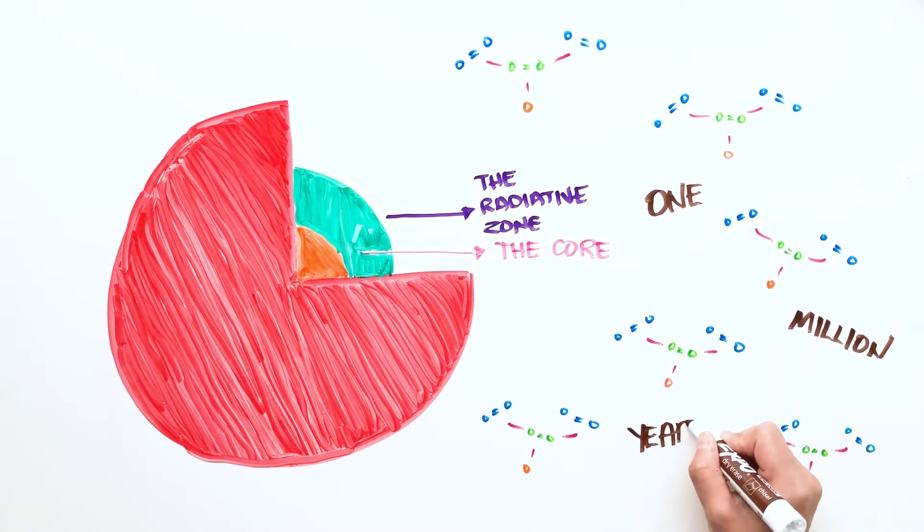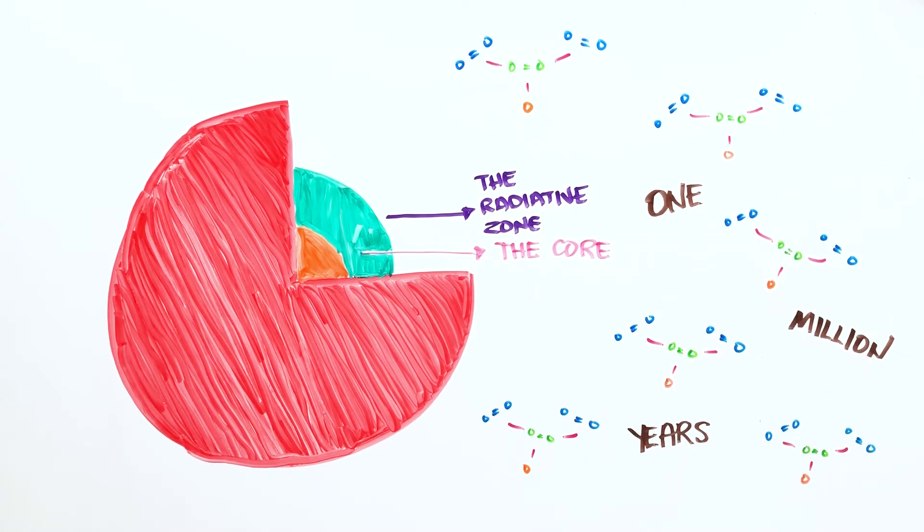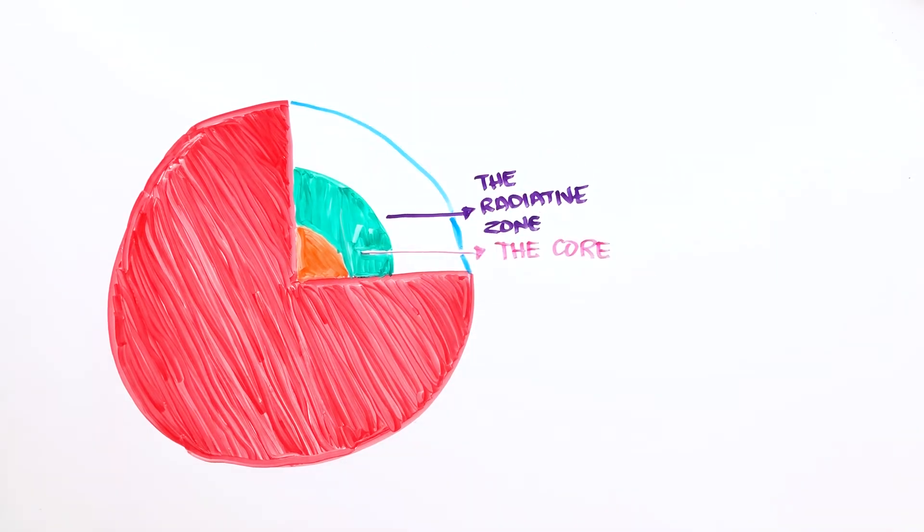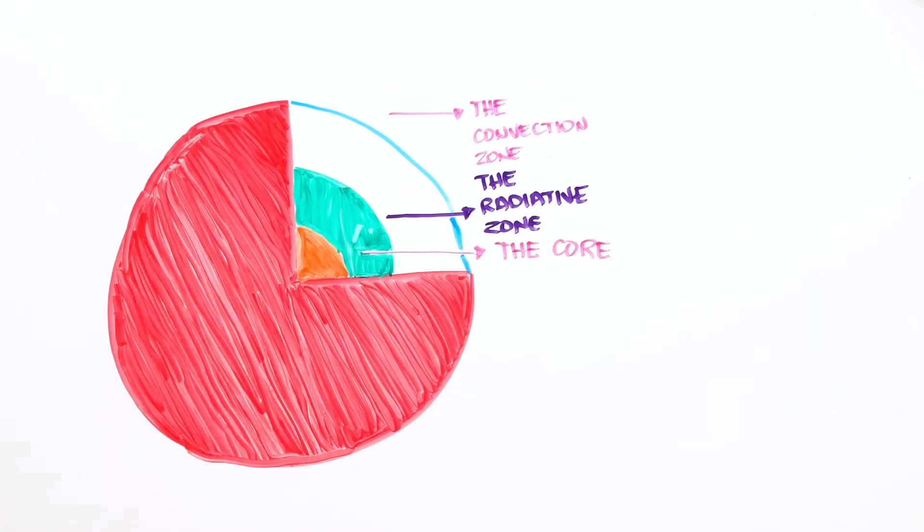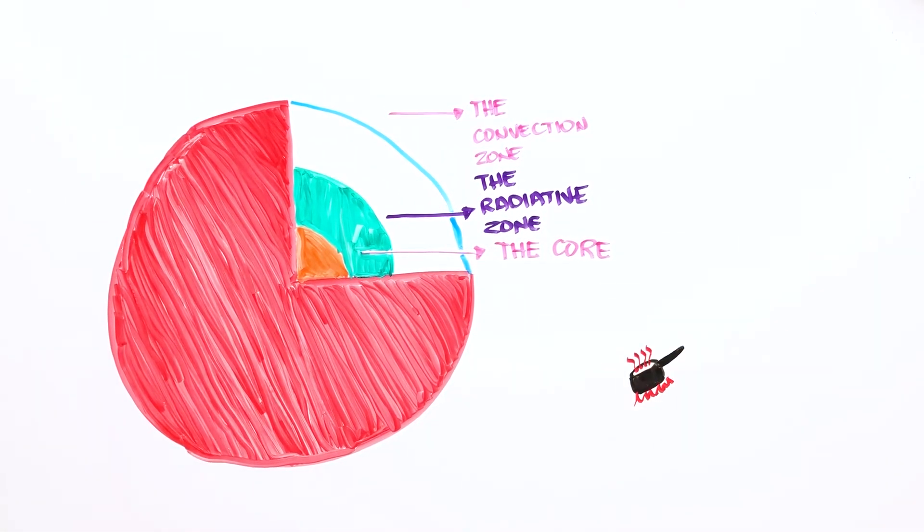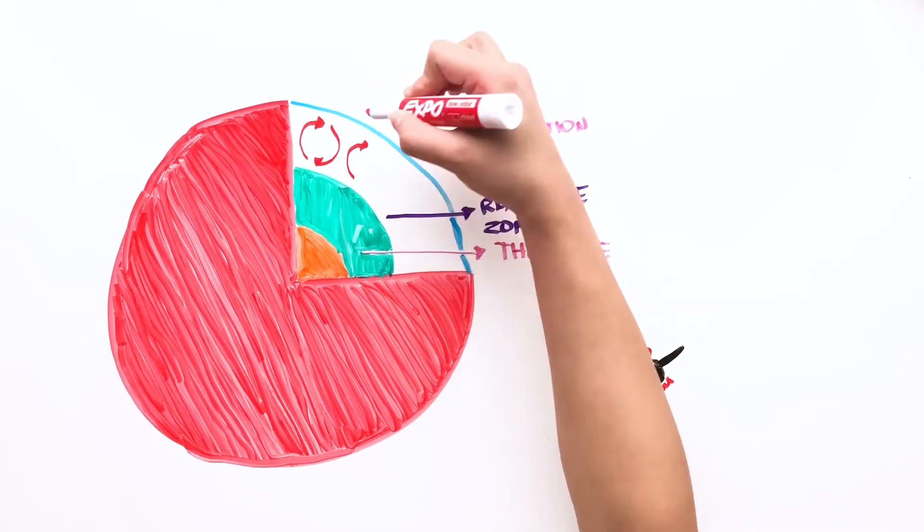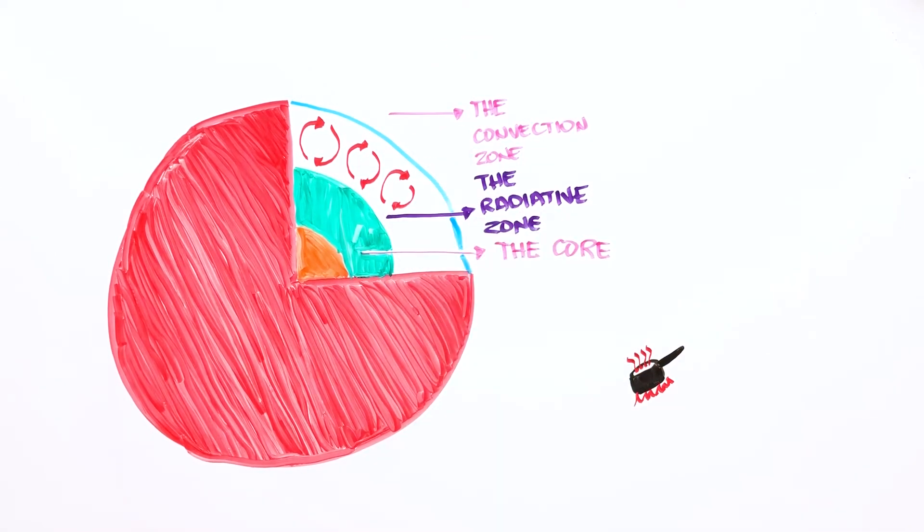As the photons move further up in the Sun, the density decreases, resulting in less collisions. It is then carried through swirls of heated plasma, like a soup boiling in a pot. The gases radiate energy in the surface, then cool and sink again, ready to pick up more energy.